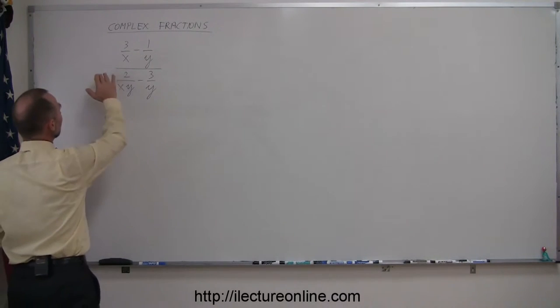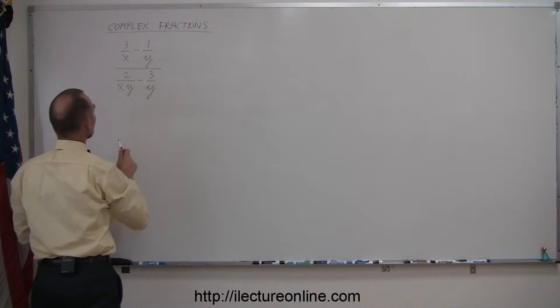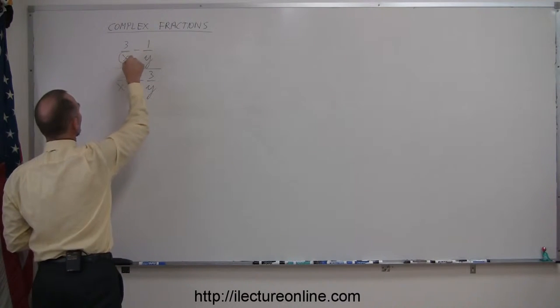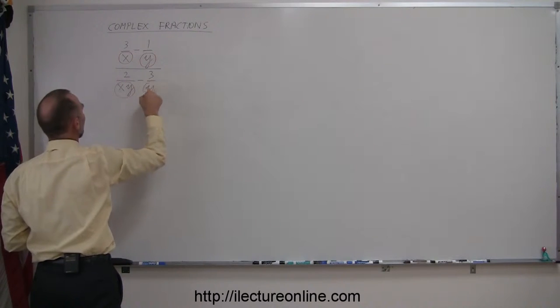Notice that in the numerator we have two fractions, and in the denominator we have two fractions. And in each of those fractions we have, of course, a denominator. So we have an x and a y there. We have an x times y and a y there.